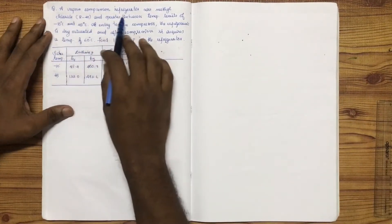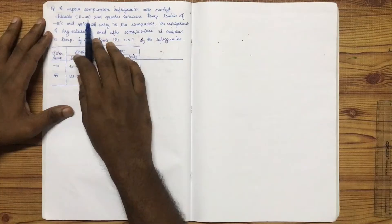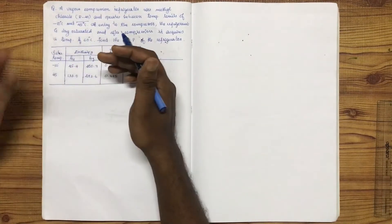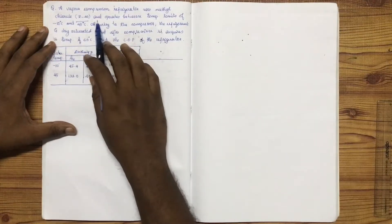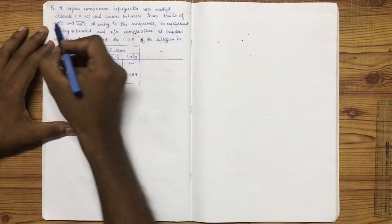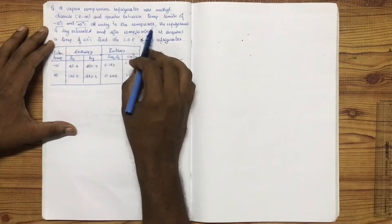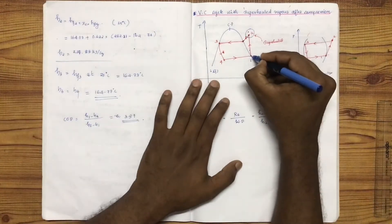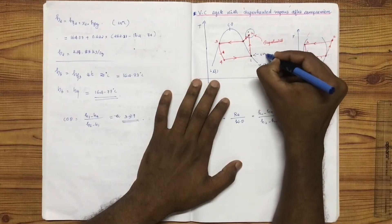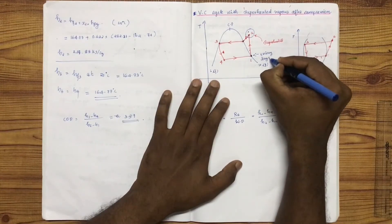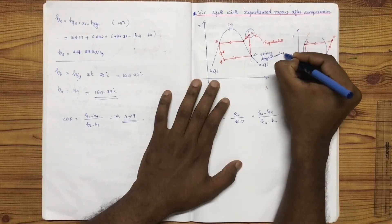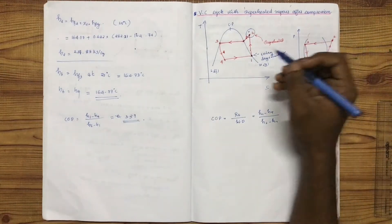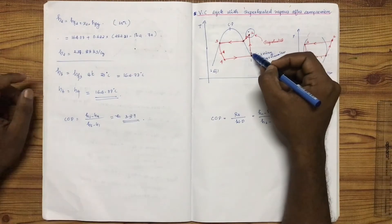The vapor compressor operation uses methyl chloride R40. We have data to evaluate the values. It operates between temperature limits of minus 10 and 45 degrees Celsius. At the entry to the compressor, the refrigerant is dry saturated — it is not superheated.